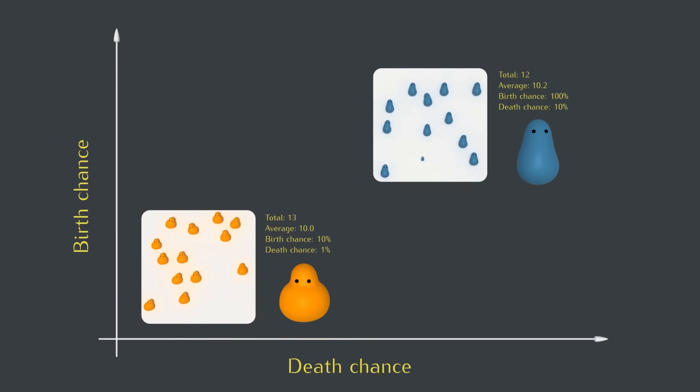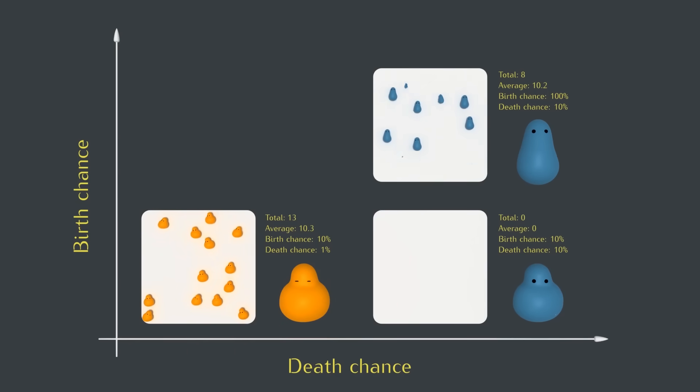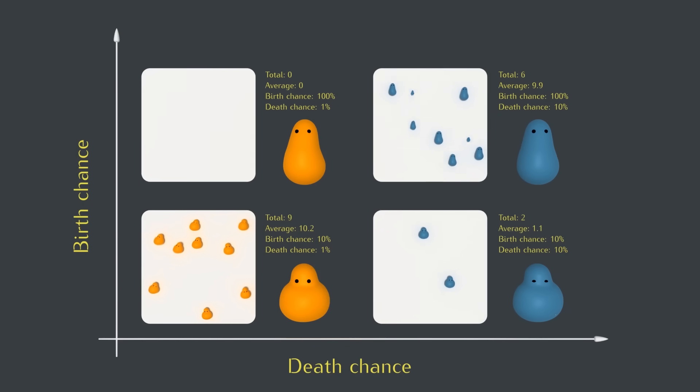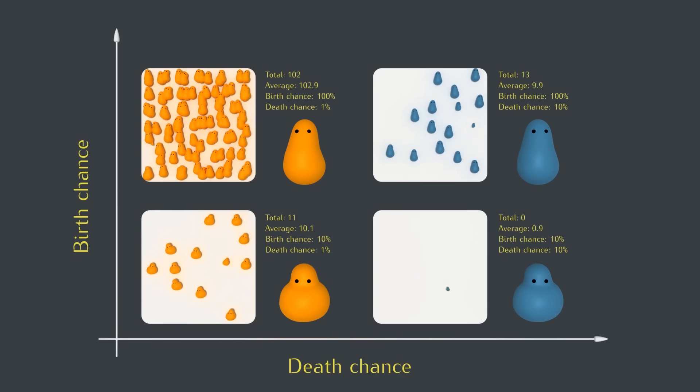You might be able to guess what happens when a kind of blob creature has a low birth rate, like a planet, and also a high death rate, like a raindrop. There just aren't very many of them. At the other extreme, if a kind of blob creature has a high birth rate, like raindrops, and a low death rate, there will be a lot of them.